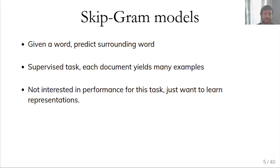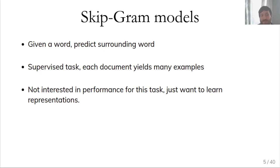One of the most common tasks is the skip-gram model: given a word, predict the words that appear around it. You can cast this as a classification task on one-hot encoded vectors. Each document yields many training examples without any annotation — each sentence yields multiple examples. This is called self-supervised because the supervision is provided by the document itself, and we're not really interested in performance on this task.